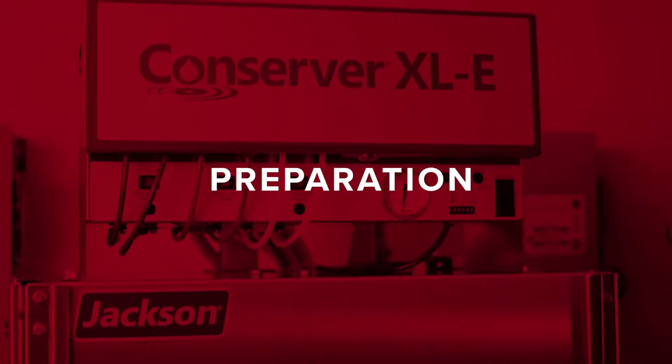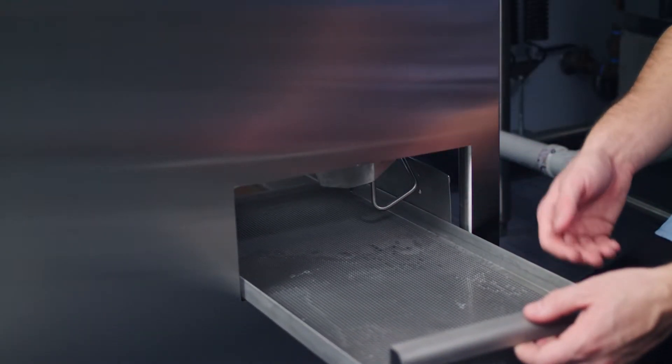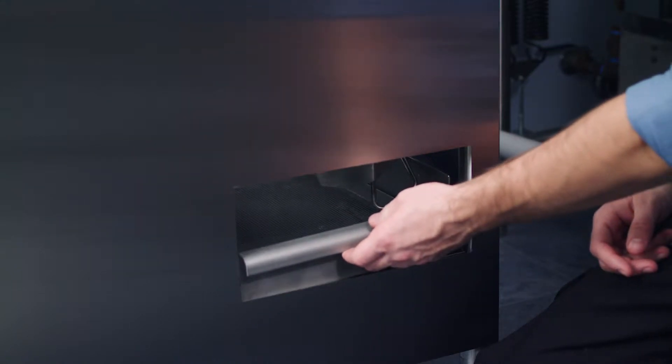Preparation. Before operating the unit, make sure the sump strainer and scrap screen are in place and clean. Inspect regularly to ensure they do not become clogged.